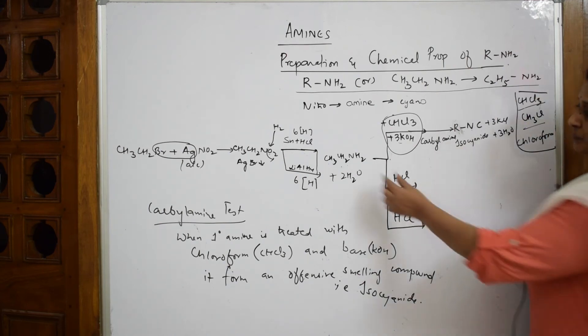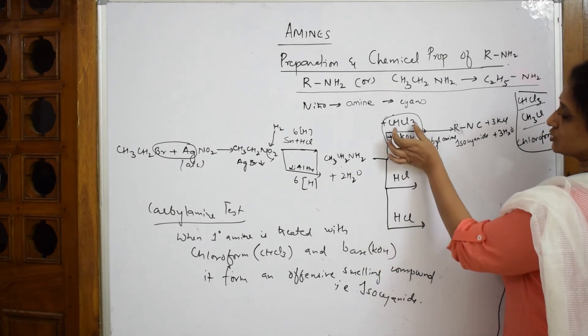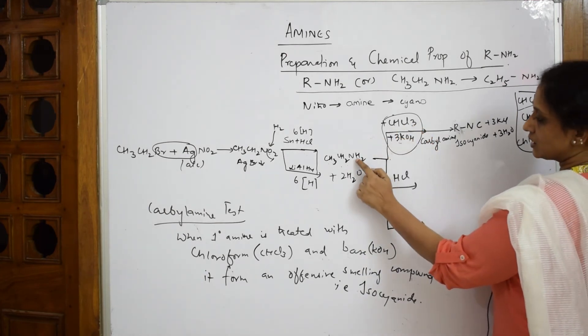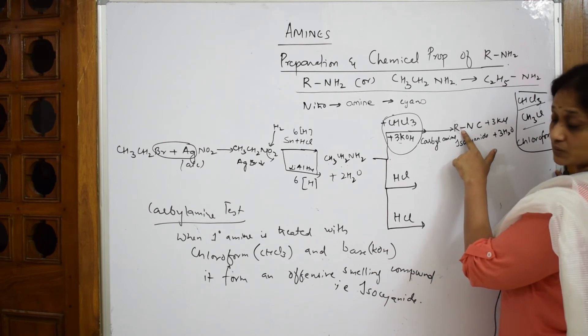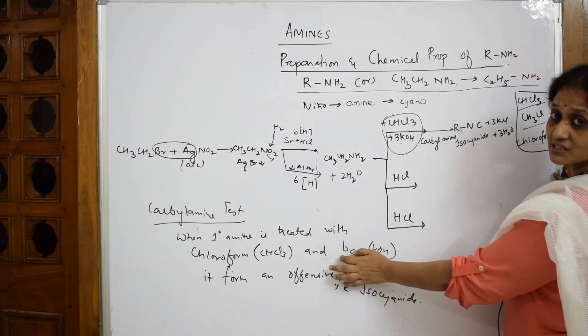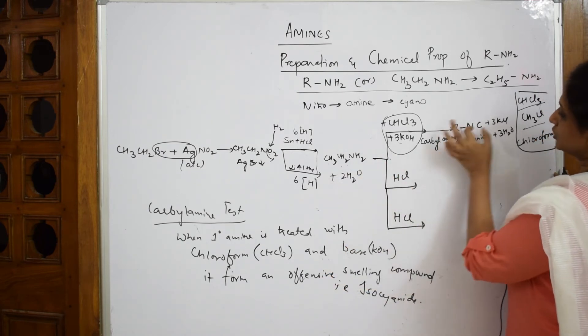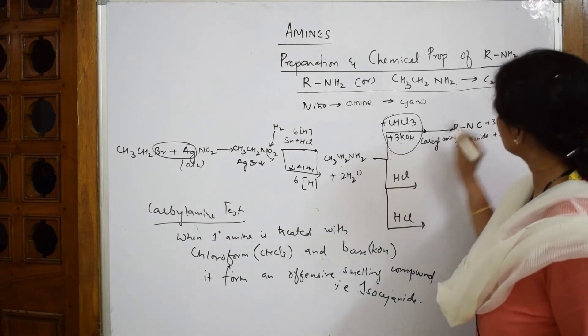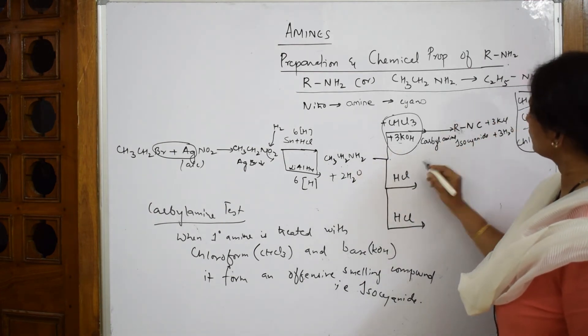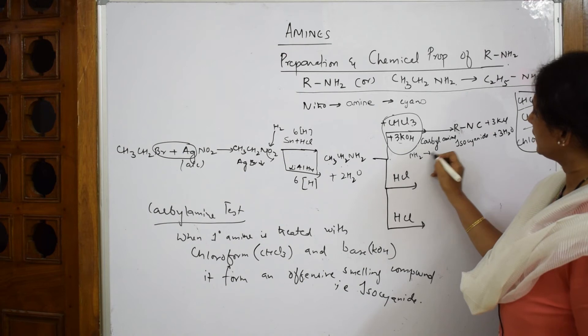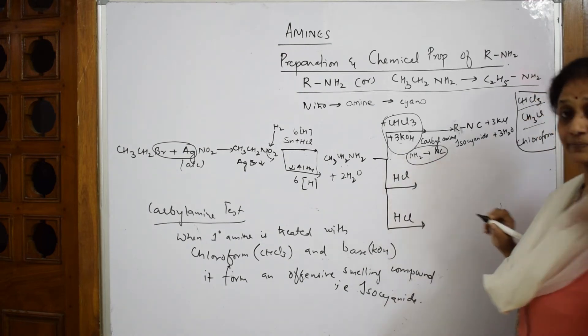Once again, amine when you see with chloroform and KOH, convert amines to isocyanide compounds. This is called carbylamine test. Amine to NC, amine to NC. So once again, somewhere you remember NH2 to NC is carbylamine test along with KCl and water.